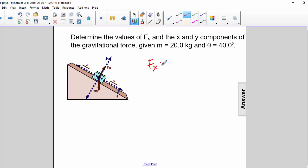So let's find the x component first. That is mg sine theta. So that's 20 times 10 times the sine of 40 degrees. So that is 126 newtons.